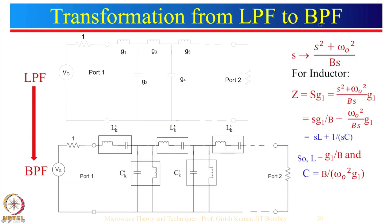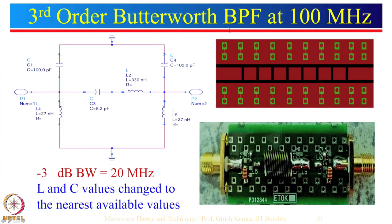For the low pass to band pass filter transformation, every inductor is replaced by a series inductor and capacitor, and every capacitor is replaced by a parallel inductor and capacitor. We had seen an example of a band pass filter at 100 megahertz, where we modified the components. The process is simple: start with the Butterworth low pass filter and transform inductors and capacitors to the corresponding parallel or series combinations for the band pass filter.